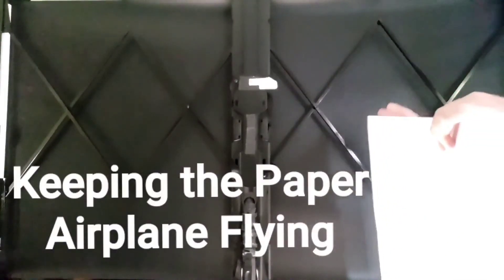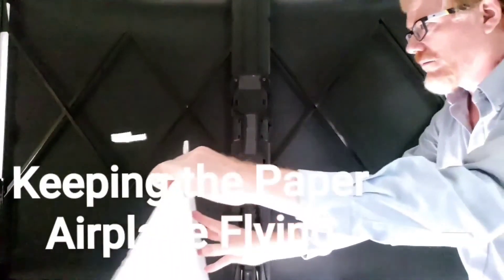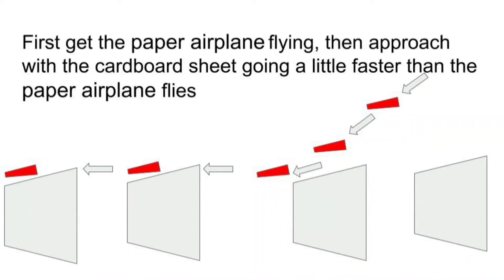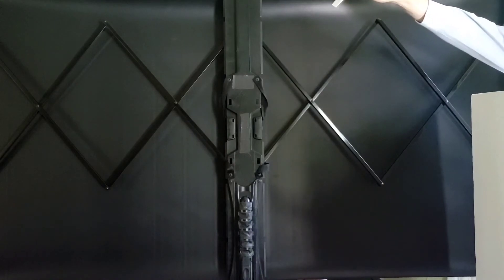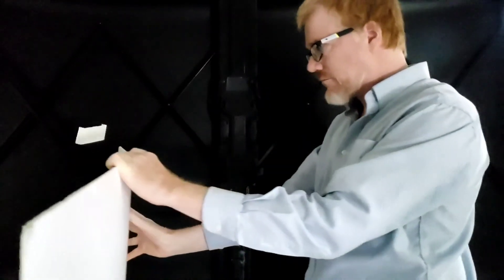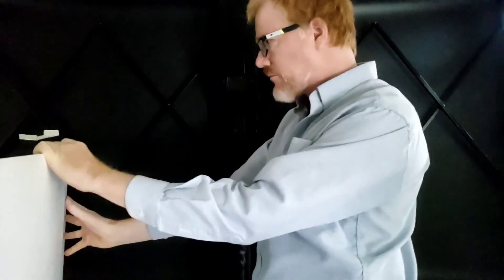To keep the paper airplane flying, we'll need to move the cardboard sheet just right. So we'll first get the paper airplane flying, then approach with the cardboard sheet going a little faster than the paper airplane flies. Launch the paper airplane high and forward of the cardboard sheet. Then move the cardboard smoothly forward to meet and then keep the paper airplane flying.